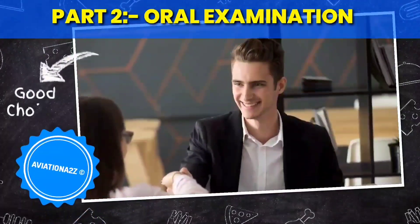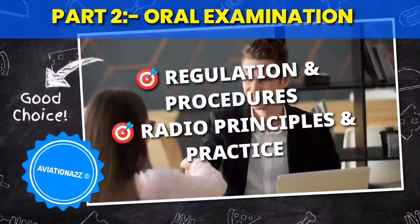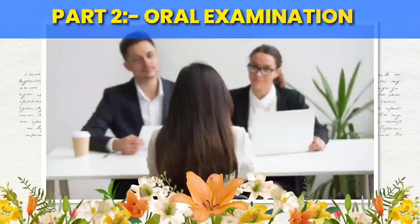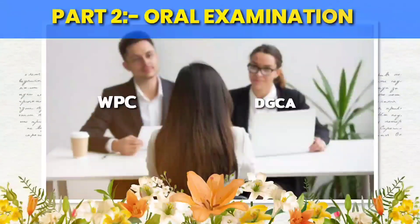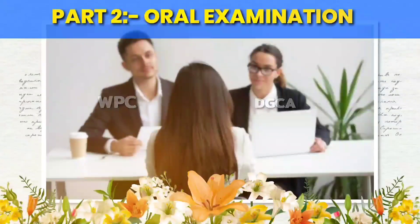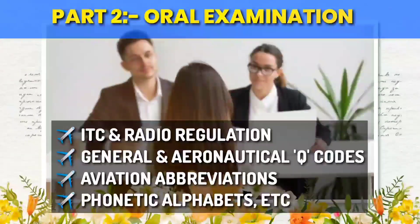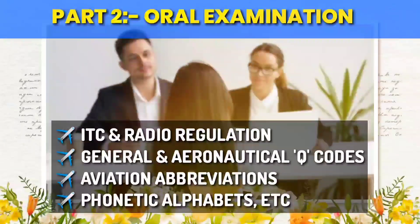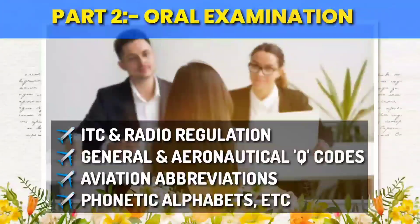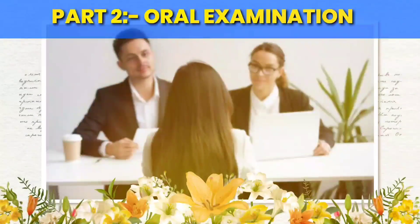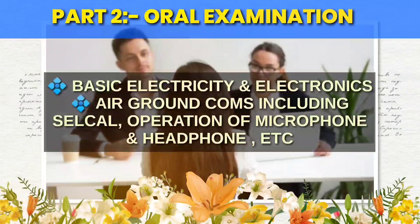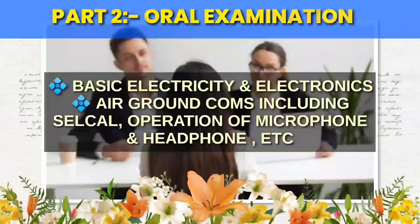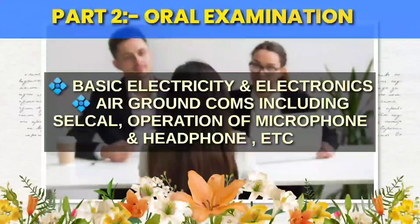Part 2 is an oral examination covering regulation and procedures as well as radio principles and practices. Two examiners are present — one from WPC and another from DGCA. They will ask questions related to ITU and radio regulations, general and aeronautical Q codes, aviation abbreviations, phonetic alphabets, and other regulatory questions. For radio principles and practice, they will ask about basic electricity and electronics, air-ground communication including selcal, operation of microphone and headphone, and much more related to aircraft communication.